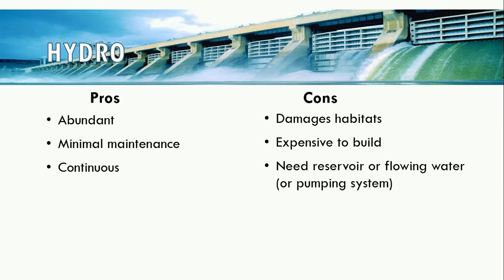On the other hand, dams destroy river habitats and prevent organisms such as salmon from traveling up or downstream. It's expensive to construct dams, considering that water needs to be held back and the wall needs to be buried into the ground. There also needs to be a big enough reservoir to supply water to the dam, or else a costly pumping system needs to be put in place, which uses a substantial amount of energy.